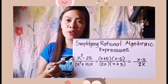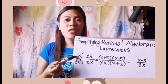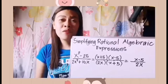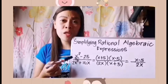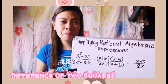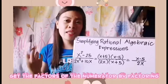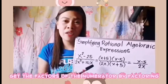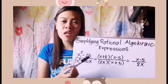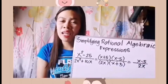First, we're going to simplify the numerator, and after that we're going to simplify the denominator by factoring. On the numerator, we have x squared minus 25. Recalling our previous learnings, this numerator can be simplified by factoring the difference of two terms. The first term x squared gives us x and x. The factors of negative 25 are positive 5 and negative 5. That is why the factors of this numerator are the quantity of x plus 5 times the quantity of x minus 5.